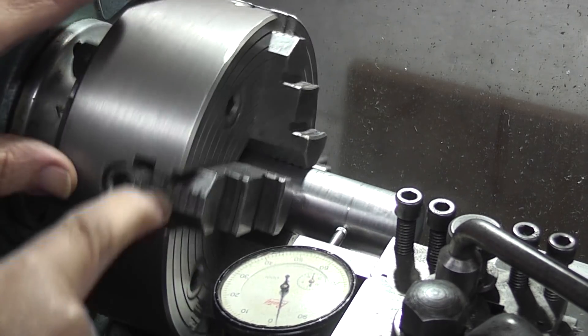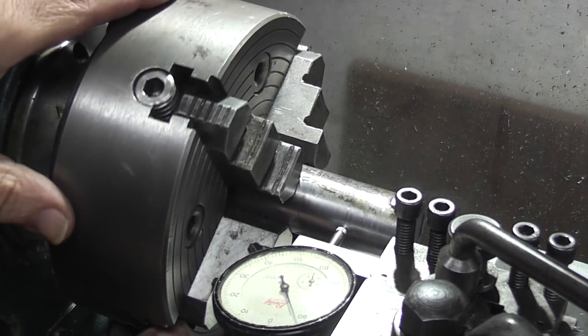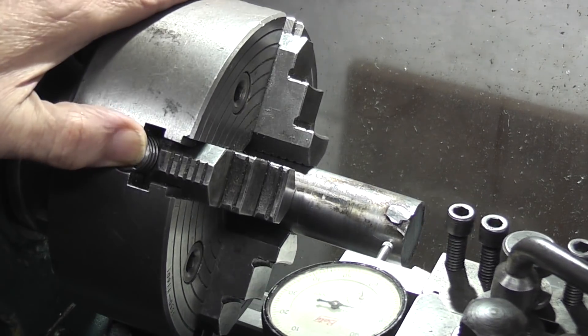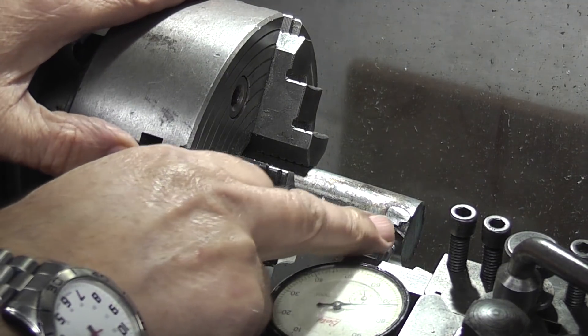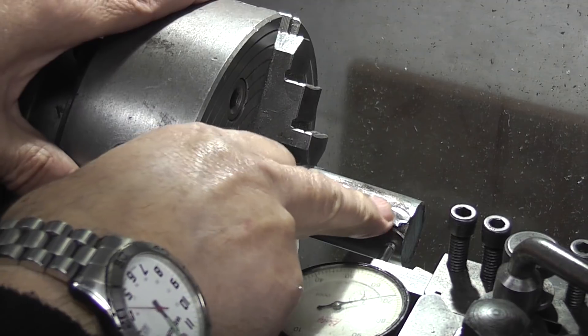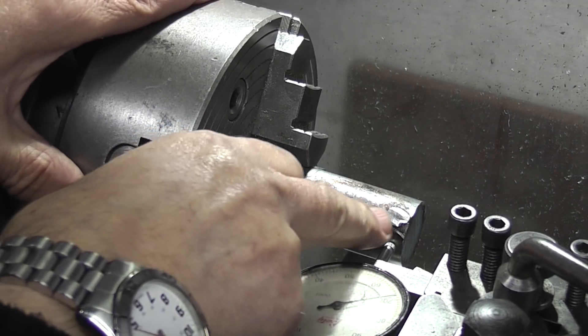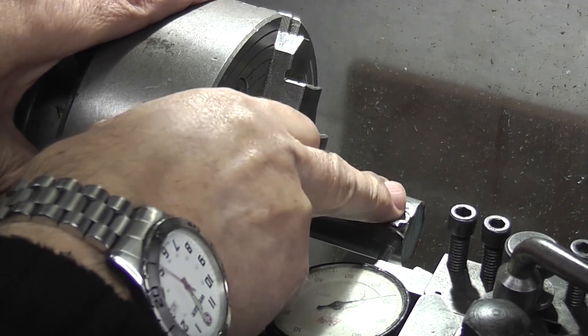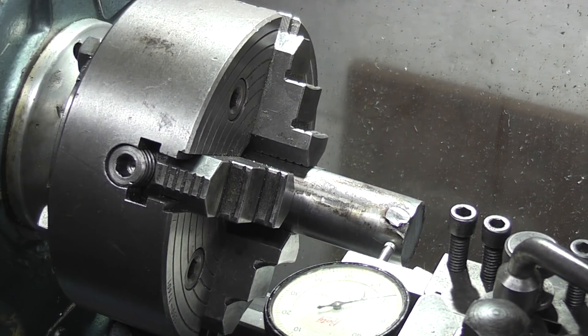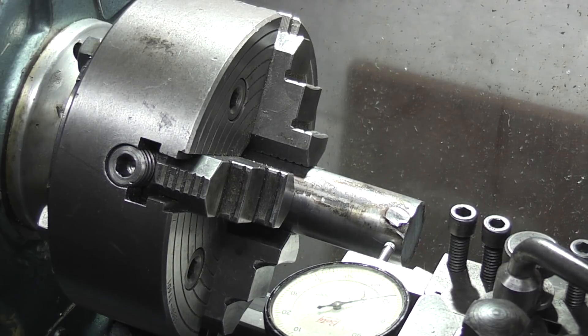But what I will have to do is just machine off, you can see on this end, it's a small welded piece where someone's welded but I want to put a 45 degree angle on this end so I'm hoping that will machine clean off. Well the first thing to do is square up the end of the bar.